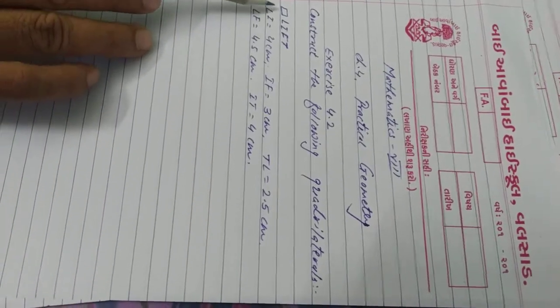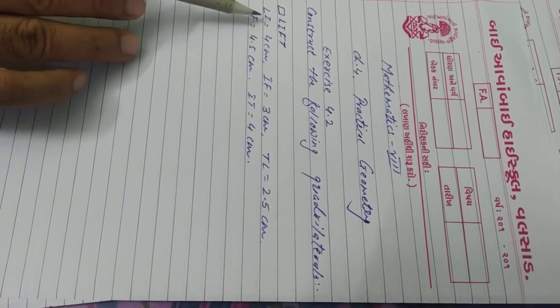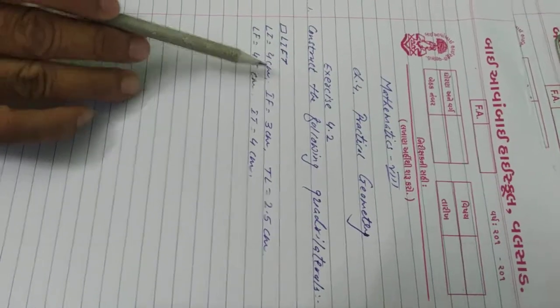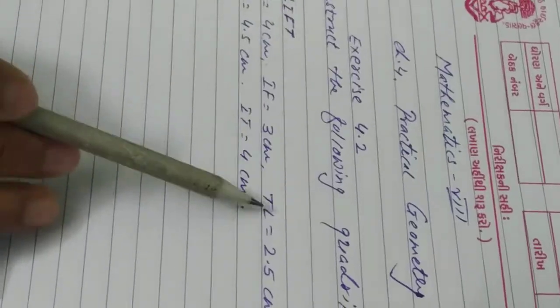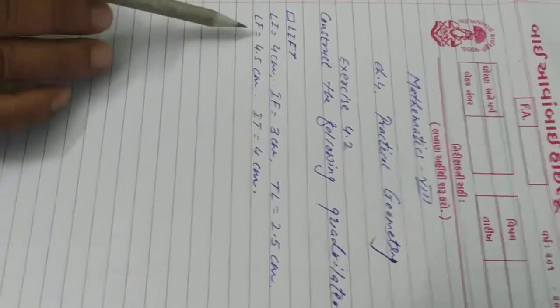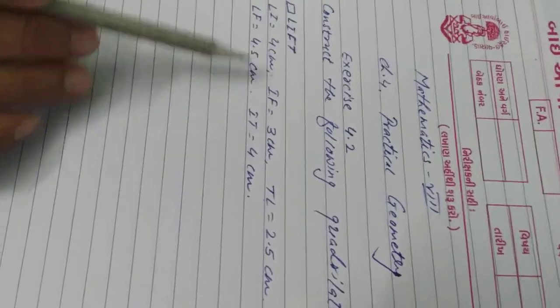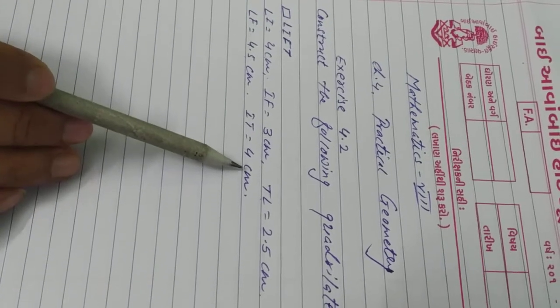See here one quadrilateral LIFT is given. The measurement of LI is equal to 4 cm, IF is equal to 3 cm, TL is equal to 2.5 cm, LF is equal to 4.5 cm and IT is equal to 4 cm.